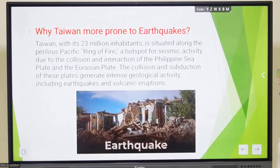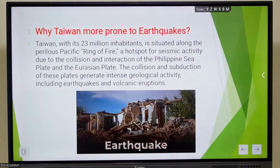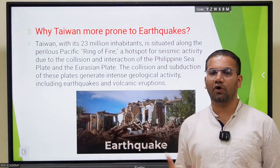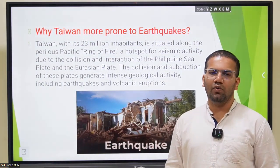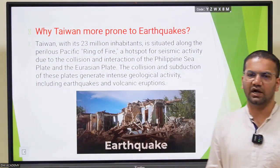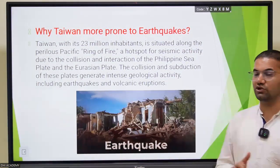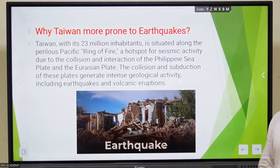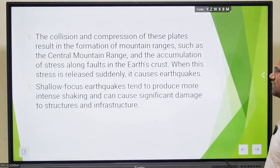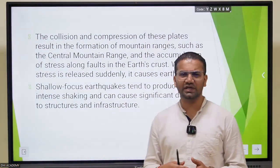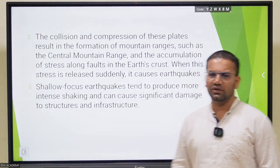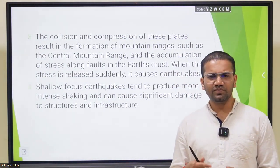Taiwan is prone to earthquakes because it is a prominent part of the seismic Ring of Fire, which is a hotspot of seismic activity. The interaction was the result of the Philippine Sea plate and the Eurasian plate - their collision, subduction, and geological activity - which added up to the 7.4 magnitude of Taiwan's earthquake. The collision and compression of these plates creates disturbances which create seismic waves, resulting in the earthquake.